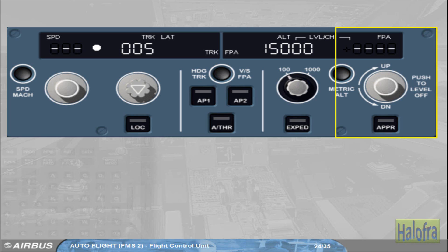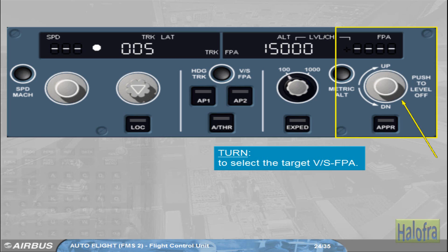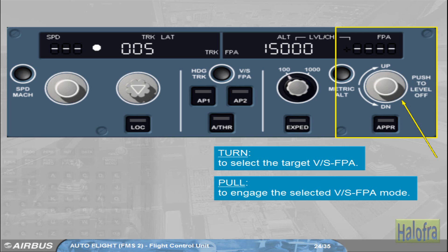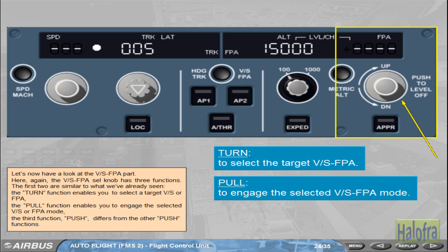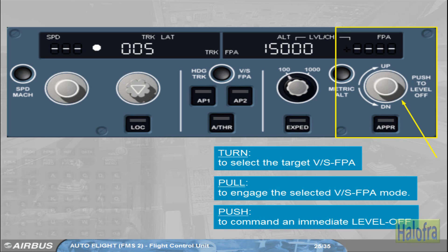Let's now have a look at the vertical speed/flight path angle part. The vertical speed/flight path angle selector knob has three functions. The turn function enables you to select a target vertical speed or flight path angle. The pull function enables you to engage the selected vertical speed or flight path angle mode. The third function — push — differs from the other push functions. When you push the selector knob, the FM commands an immediate level off: vertical speed or flight path angle equals zero. The value zero is then displayed in the window as well as on the FMA.